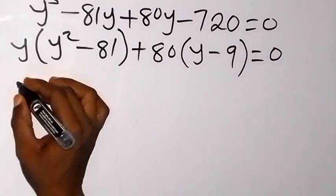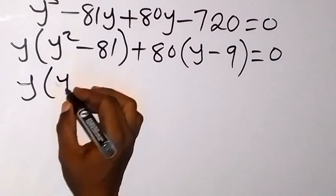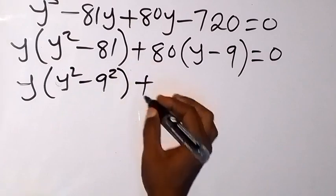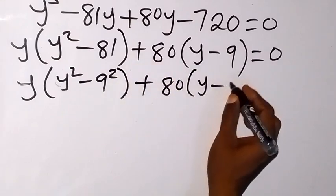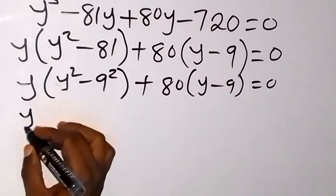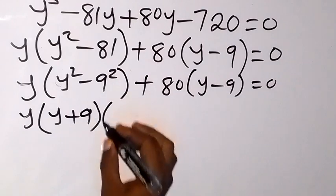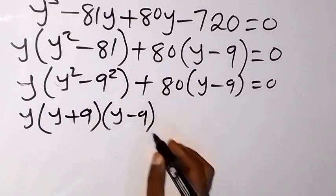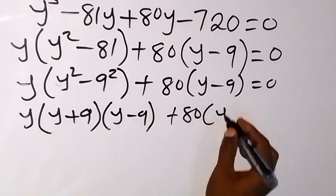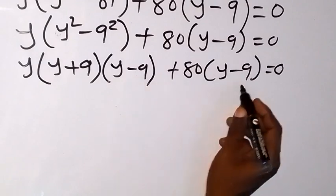We can express 81 as 9 squared, so we have y multiplied by the bracket y squared minus 9 squared, then plus 80 into bracket y minus 9, equals 0. This y squared minus 9 squared is a difference of two squares. Applying that, we get y times bracket y minus 9 times bracket y plus 9, plus 80 times bracket y minus 9, equals 0.